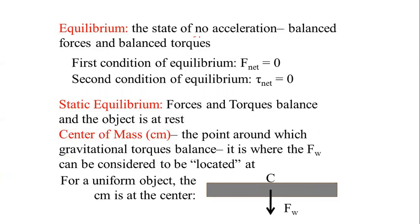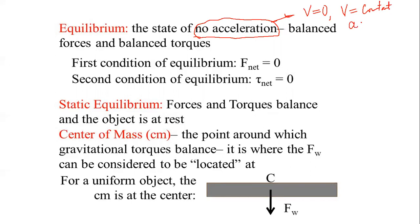The key factor is how the no-acceleration state is obtained — whether the velocity of the object is zero or constant, either linear or angular. If velocity is zero before and after the force system is applied, the body is in static equilibrium. If linear or angular velocity is constant, then acceleration is zero and the body is in dynamic equilibrium.